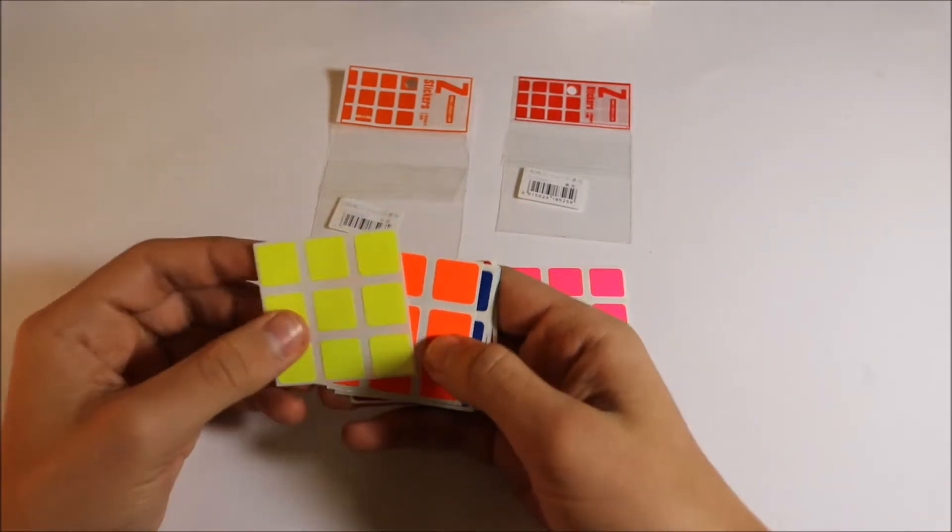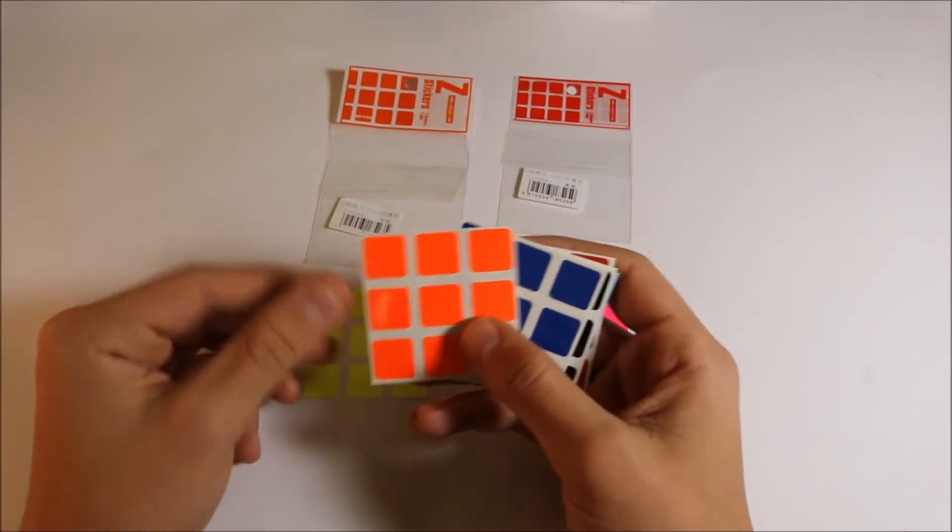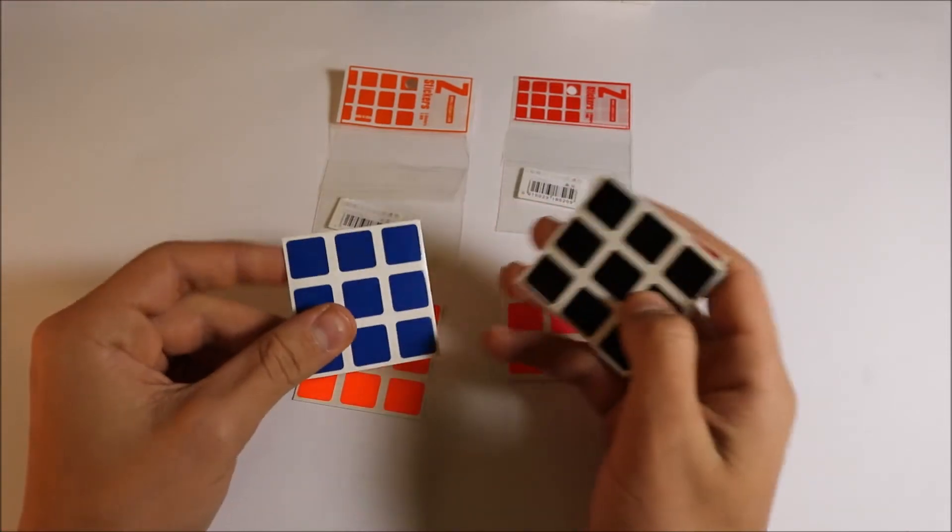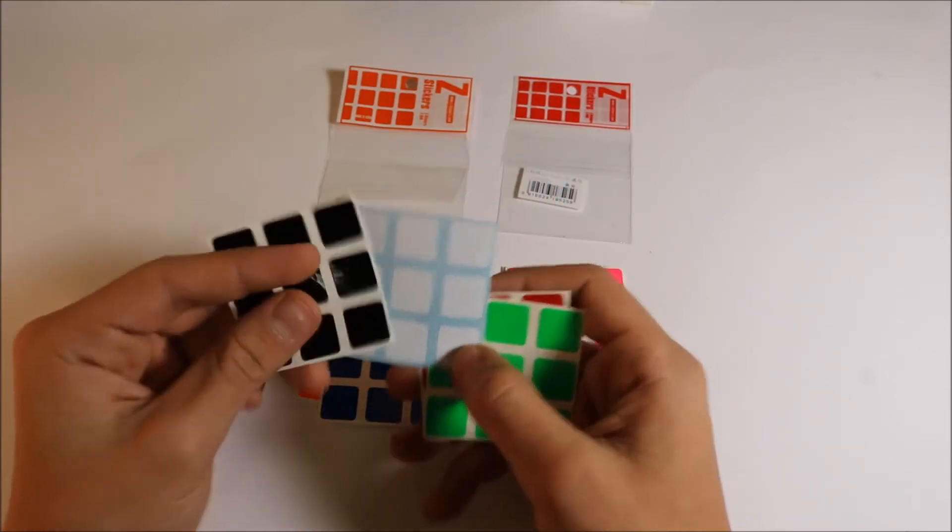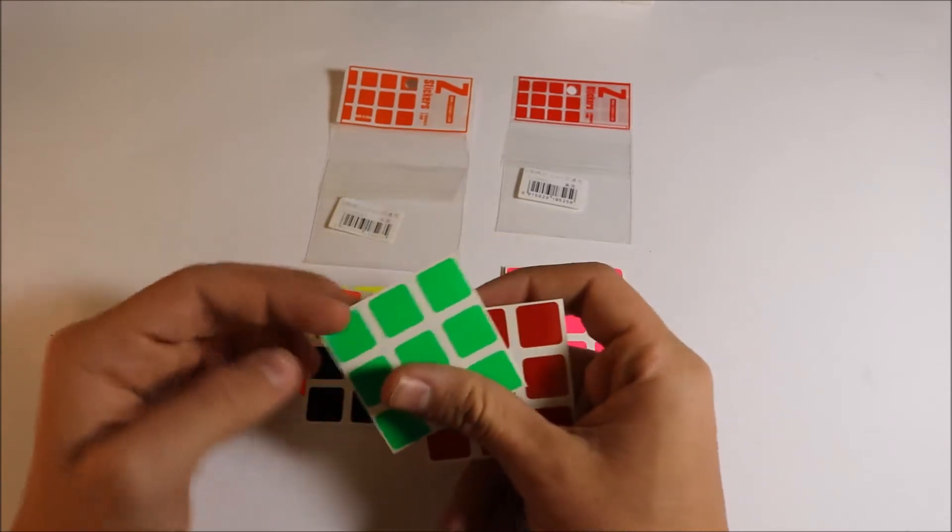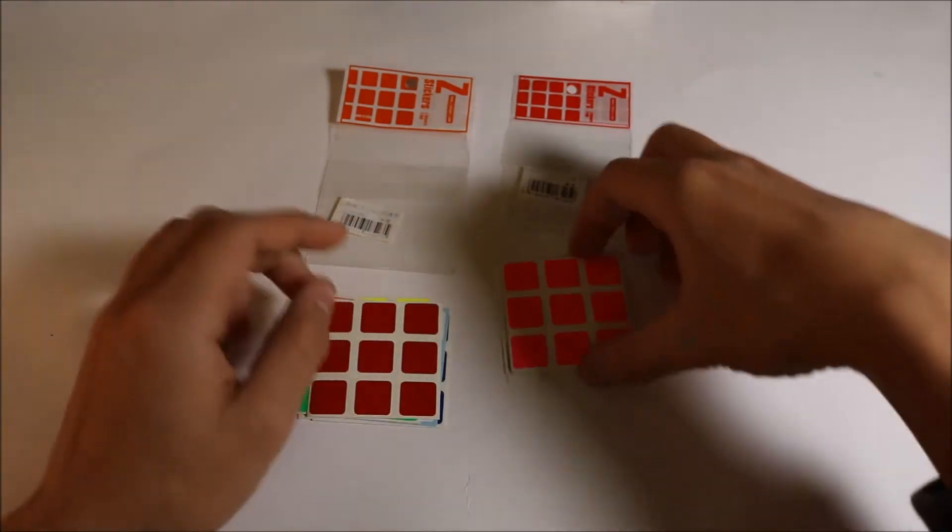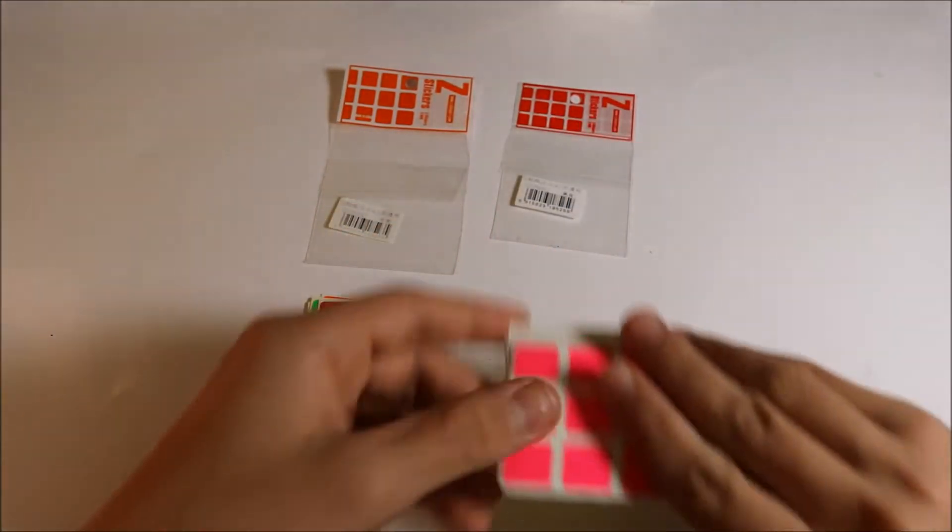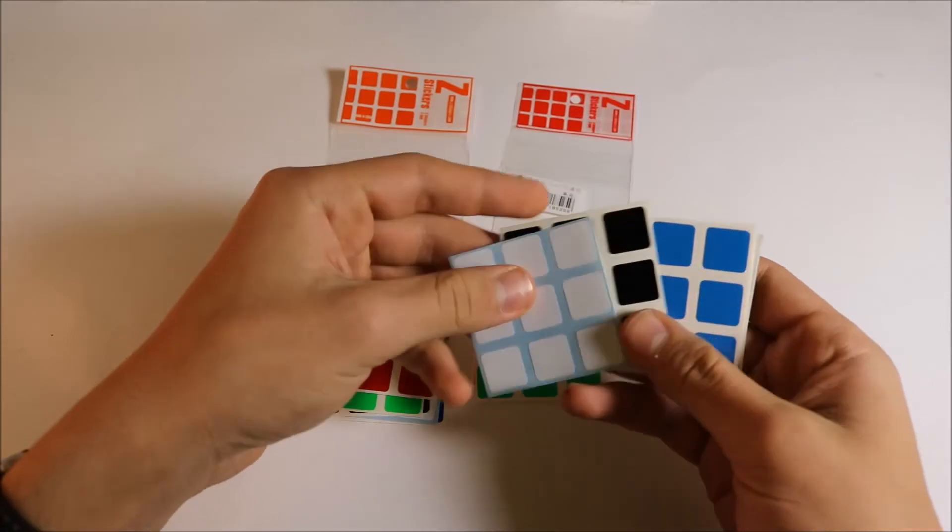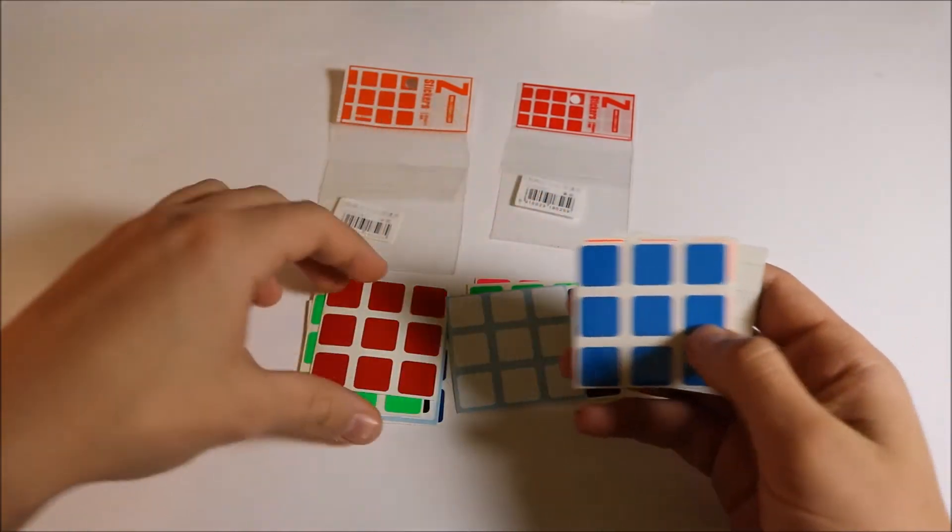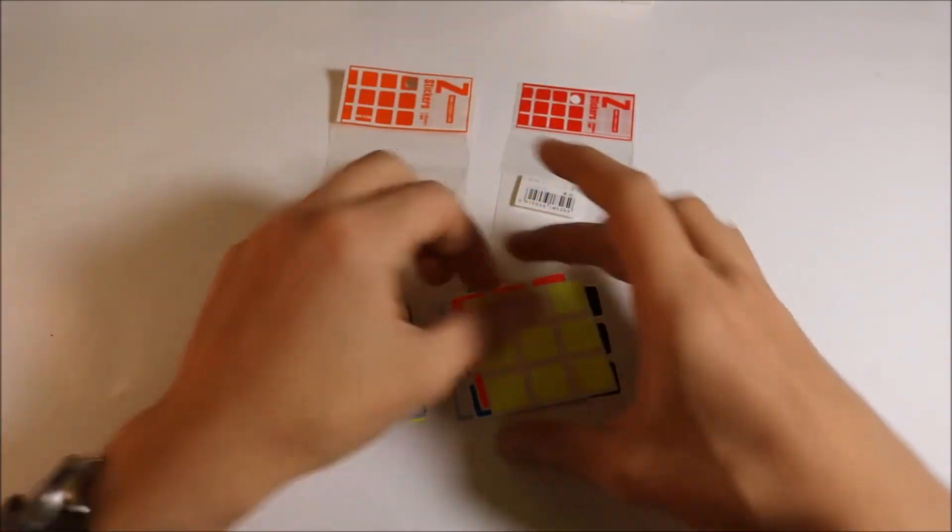All right, so in these stickers for the half bright we have fluorescent yellow, fluorescent orange, regular blue, black, and white. So you can choose different options with the Z logo in the middle, lime green and regular red. In the full bright we have hot pink, lime green, white and black again, lighter blue, fluorescent orange and fluorescent yellow.